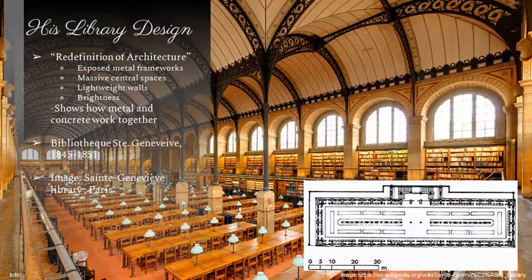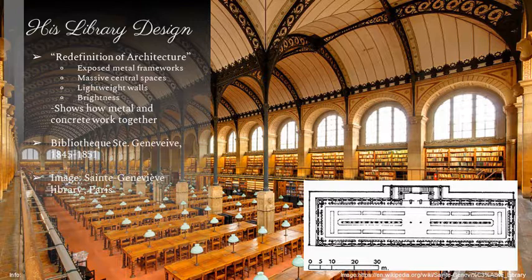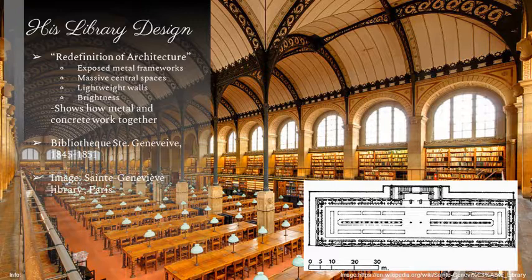Moving on to his library design — this is really what he was known for most. He sought a redefinition of architecture, something pretty bold. It includes exposed metal iron frameworks, massive central spaces, lightweight exterior walls, and a massive amount of brightness from very large windows. He felt this should be the centerpiece of what a library should look like.